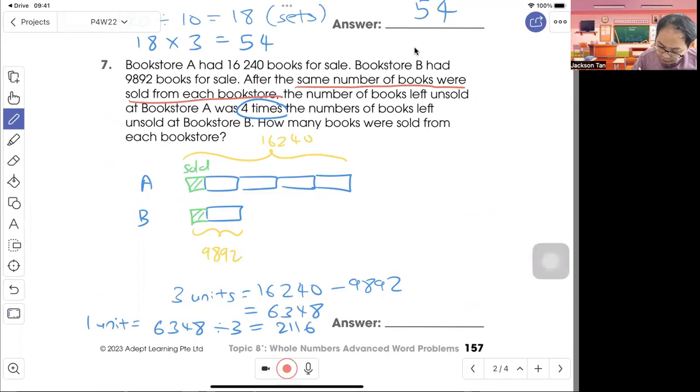So now you know that one unit is 2,116, then to find sold just take 9,892 minus 2,116. Answer is 7,776.